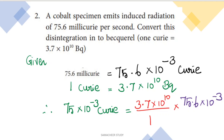Next question: A cobalt specimen emits induced radiation of 75.6 millicurie per second. Convert this into becquerel. Given: 1 curie equals 3.7 × 10^10 becquerel. This is a very direct question — it is just a multiplication method, a conversion of units. Curie and becquerel are both units of radioactivity.